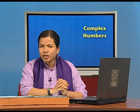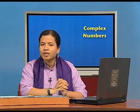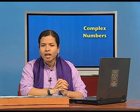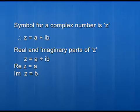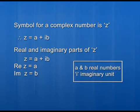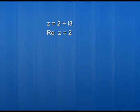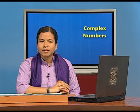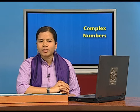Since a is a real number, we say a is the real part of z. But why do we call b the imaginary part of z? Notice that b is multiplied with i, where i is called an imaginary unit. So i times b is called an imaginary number. Even though b itself is a real number, we call b the imaginary part of z. For example, if z equals 2 plus i3, then the real part of z is 2 and the imaginary part of z is 3, since 3 is the coefficient of i.